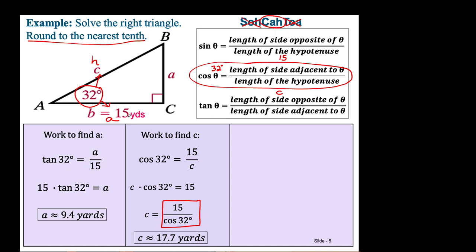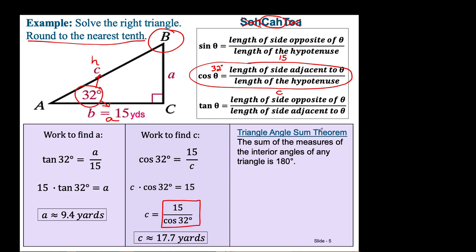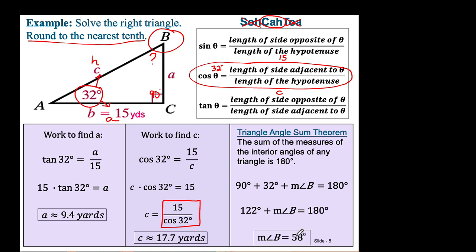The last missing piece is angle B. The triangle angle sum theorem is the most straightforward: 90 + 32 + measure of angle B = 180 degrees. Combining like terms: 122 + angle B = 180. Subtracting 122 from both sides gives angle B = 58 degrees. This completes solving the right triangle.